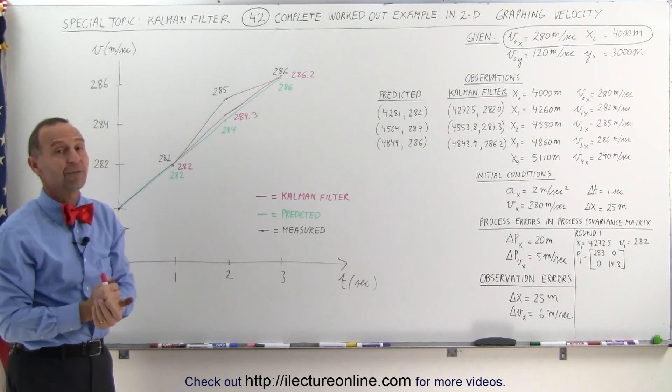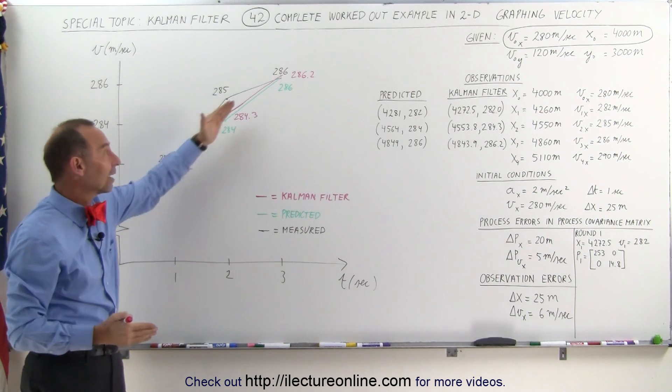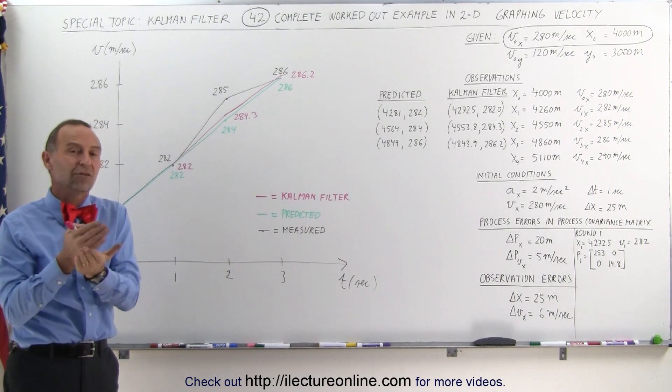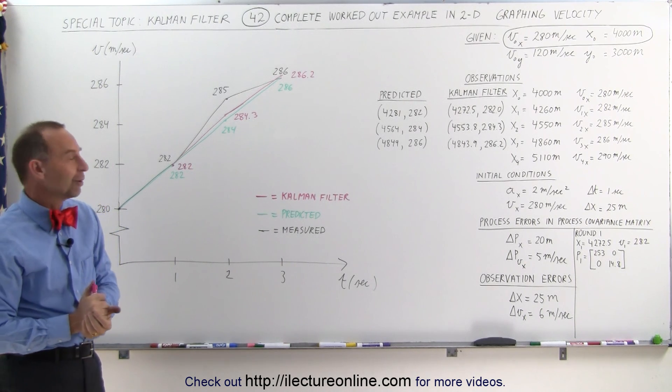And that's why Kelvin filters are so great and they work so quickly. Even after three rounds you can see how nicely the Kelvin filter velocity zeroes in to probably the correct value. And that's why we use the Kelvin filter.